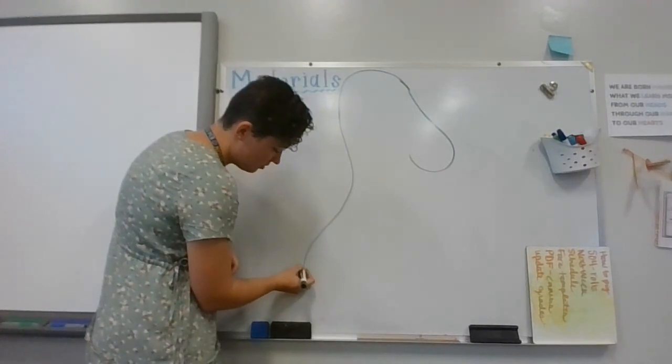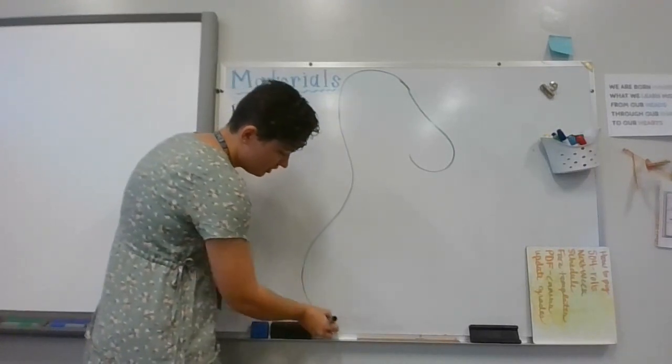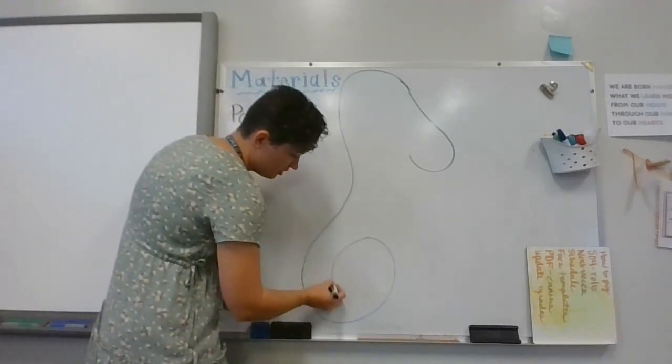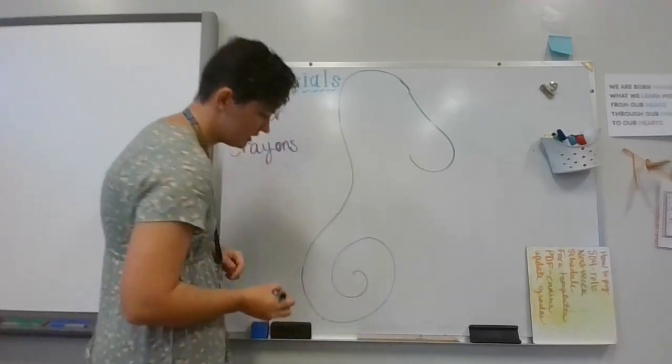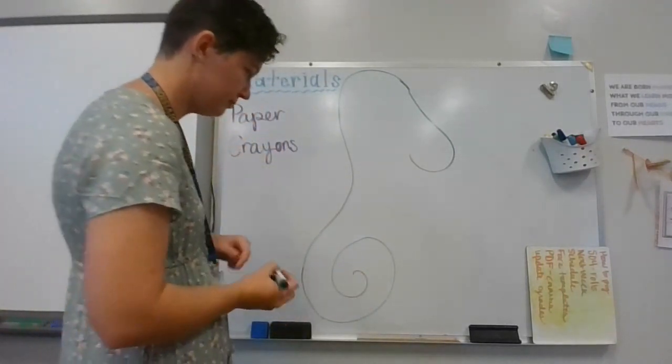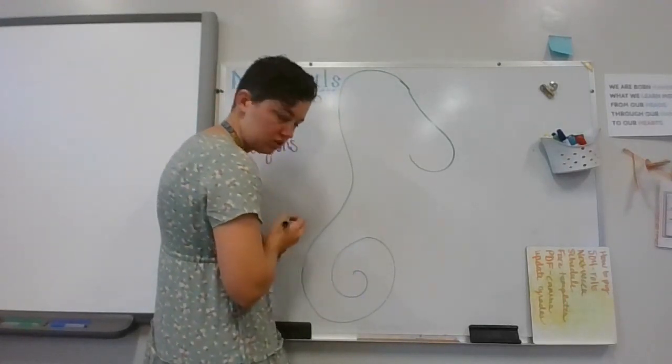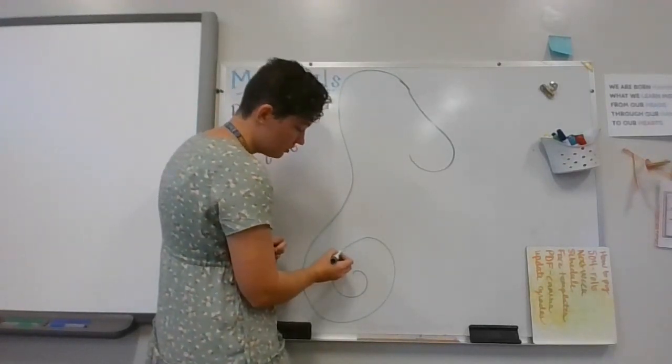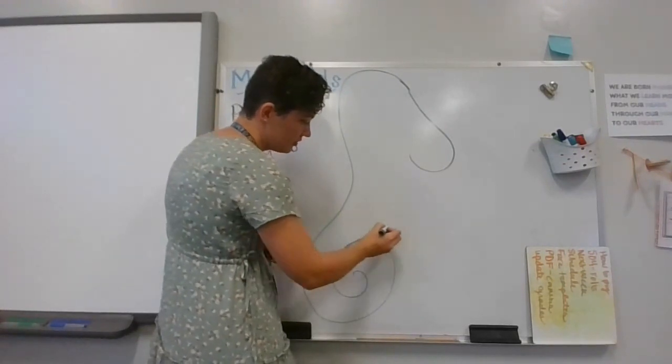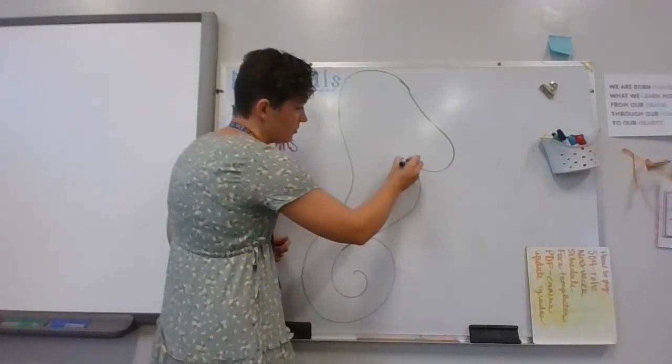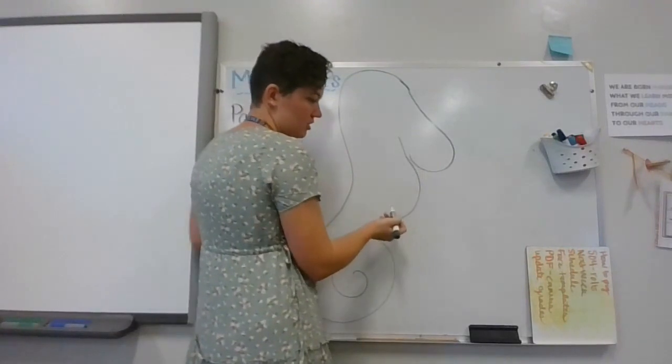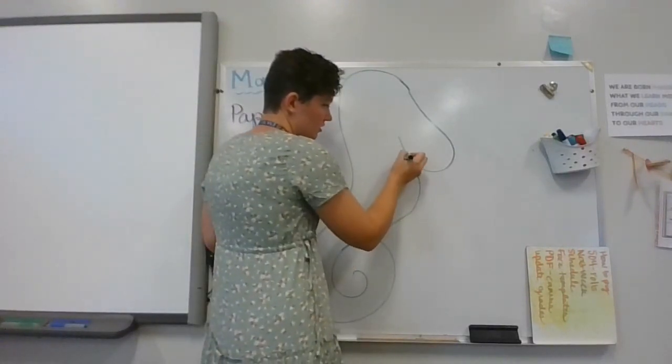Now we have to do the tail. We're going to come down and curve it around—that's the tail. Then after you've done the curly tail, jump up here, go out for the belly, and curve back up to the chin to connect it.